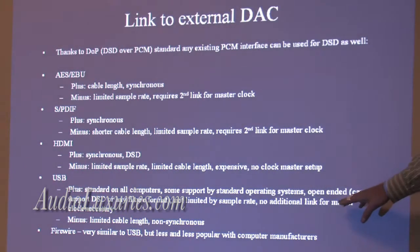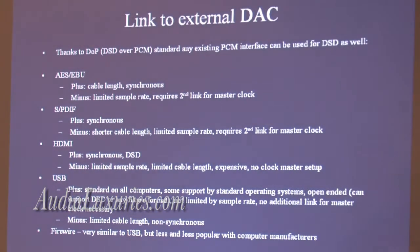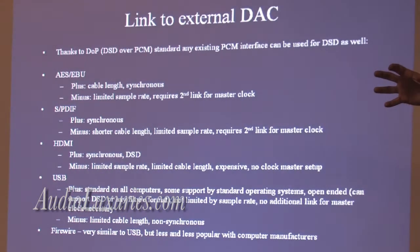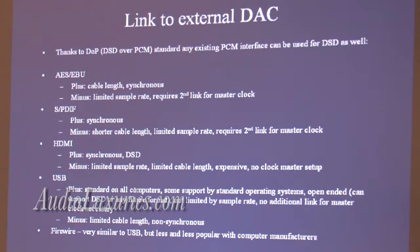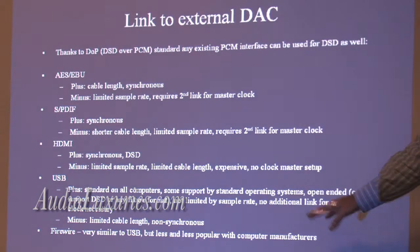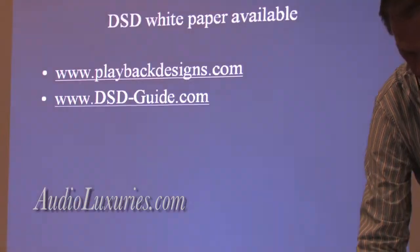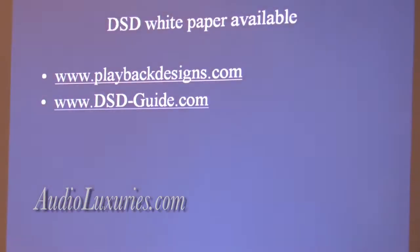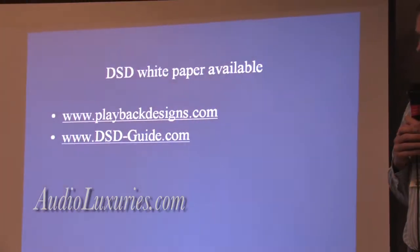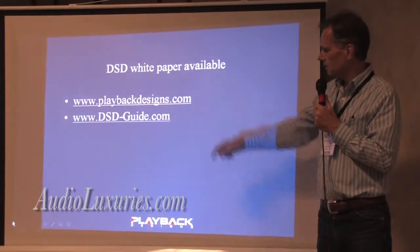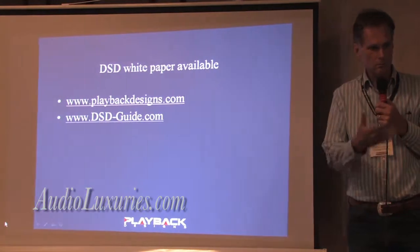The only disadvantage of USB is limited cable length, but you can overcome that with encode/decode equipment — USB to Ethernet and then Ethernet back to USB — and with a CAT5 cable you can run around the block, no problem. Firewire is very similar to USB but it's becoming less and less popular. In my view, USB has become the established standard for high-resolution file playback including DSD from a PC. There's a lot more information in a white paper I published about six months ago, available on those two websites shown here.